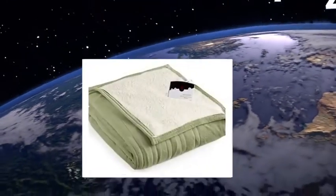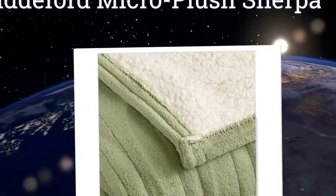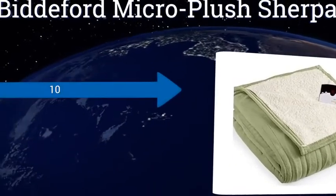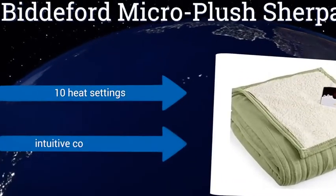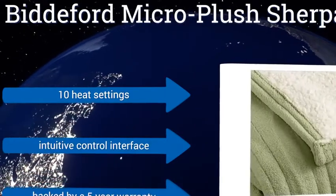At number four, the Bidford Micro Plus Sherpa has a different material on each side of the blanket, offering more versatility than many other options. It comes packed in a reusable zipper plastic bag that has a handle for simple storage and transport. It features 10 heat settings, an intuitive control interface, and a five-year warranty.